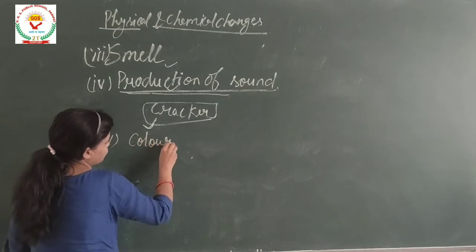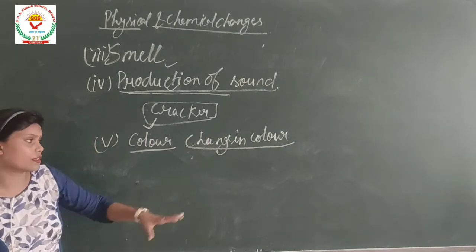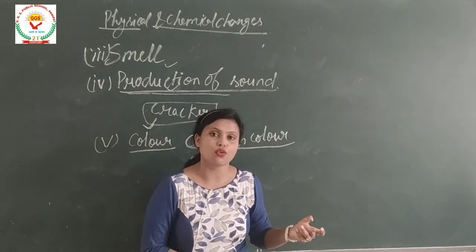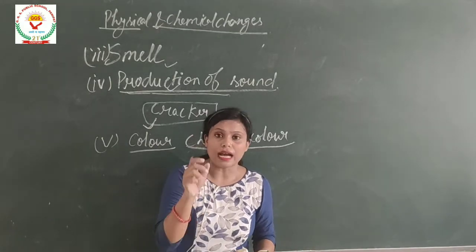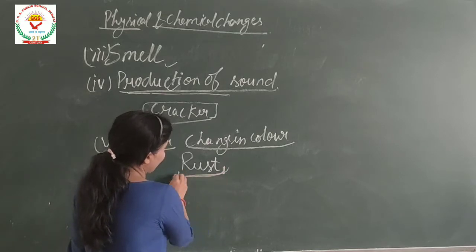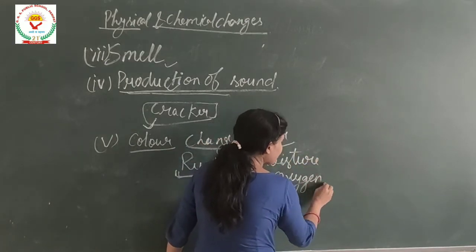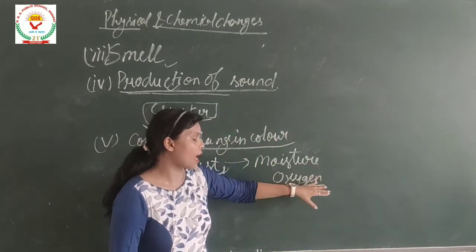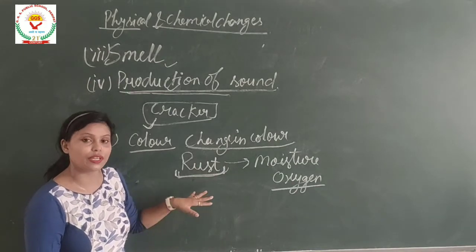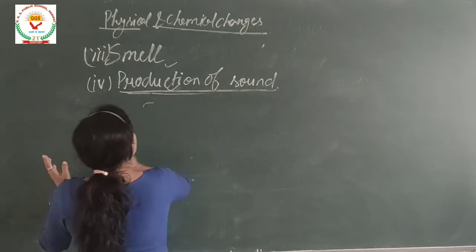The last characteristic is change in color. Have you ever noticed that iron objects turn brown when left in the open? That brown part is known as rust. Rusting occurs due to moisture and oxygen — when iron is left open in moisture and oxygen, it gets converted into rust. This is also a chemical change. Rusting can be prevented by several methods.